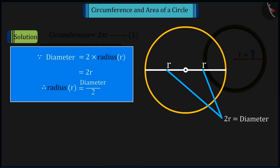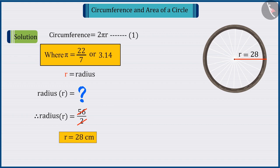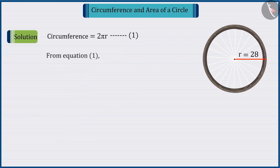We learned in our previous class, half the diameter is the radius. Therefore, dividing the diameter of the wheel by 2 gives us 28 cm as the radius of the wheel. By putting it in the circumference values, i.e. in equation 1, we get the circumference of the wheel as 176 cm.